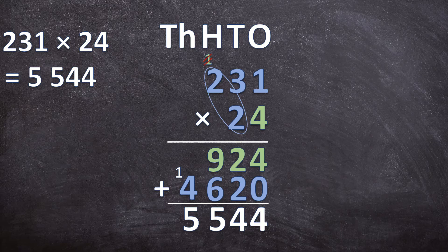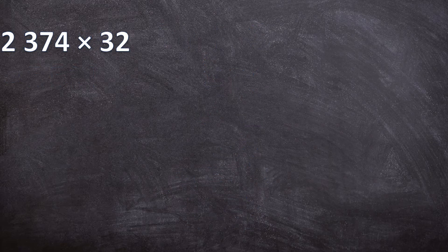Now let's move on to a four-digit number times a two-digit number. If you feel you need more practice with three-digit by two-digit multiplication, there will be a worksheet with a memo in the description box below — just click the link and download it. But now let's move on. Here we have 2374 times 32.